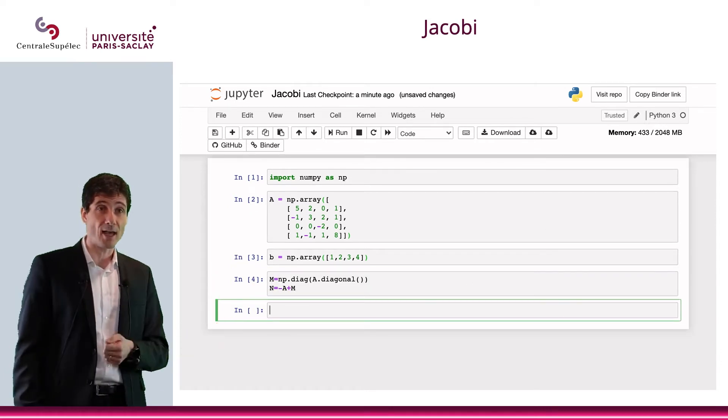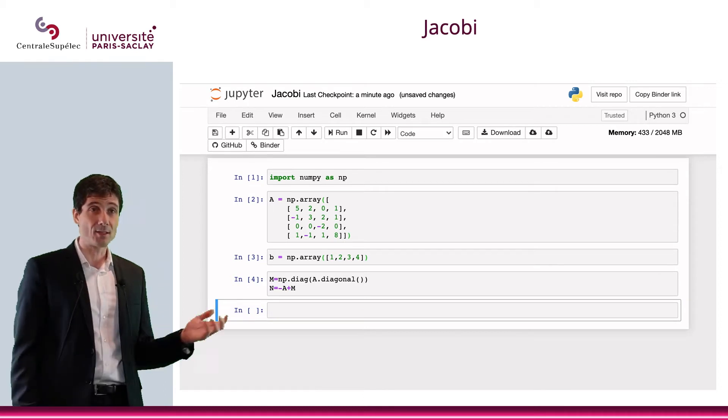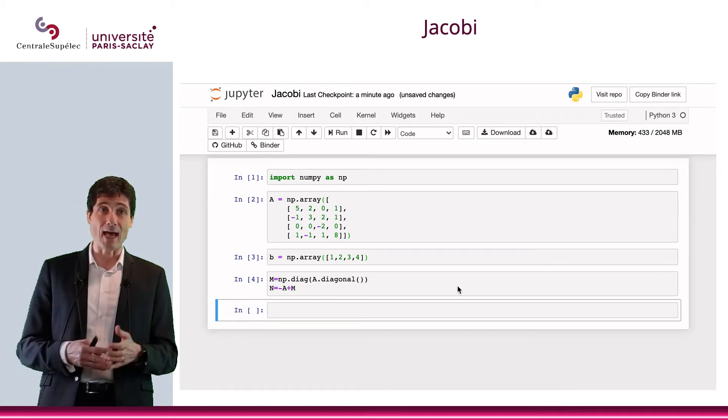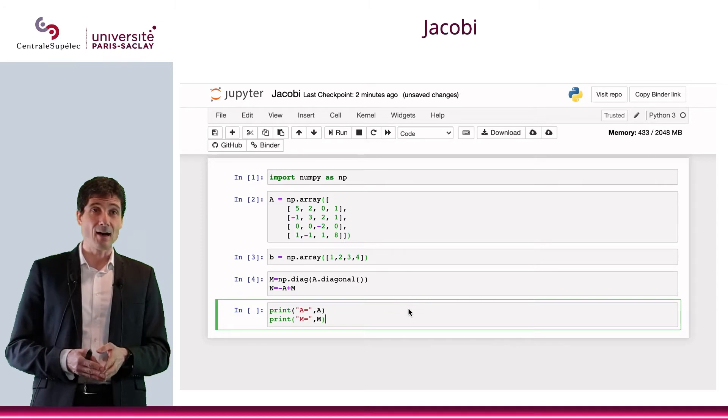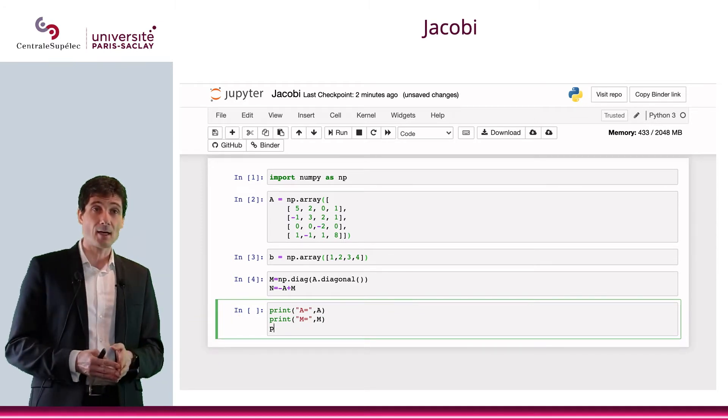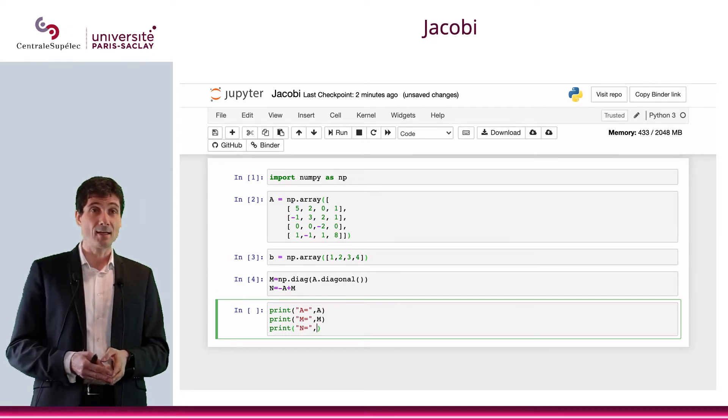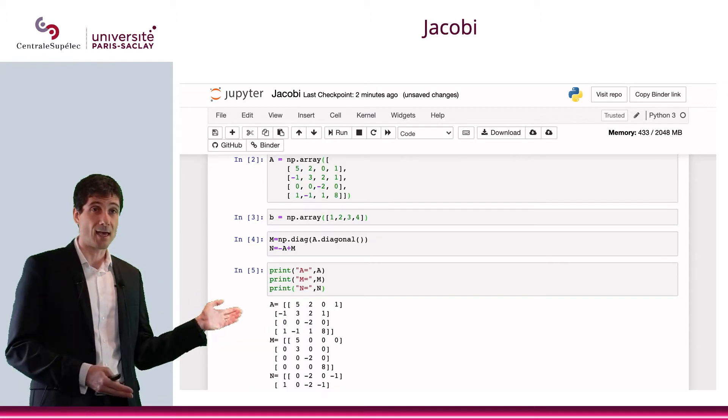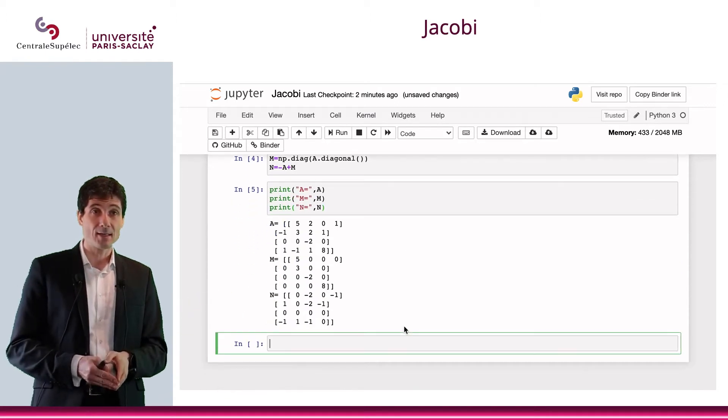So first, I'm going to enter M and N. Well, this is just some syntax to actually have the diagonal terms of A. And obviously, once I have M, well, N is easy to compute. Let me print all three matrices A, M, and N to make sure that no mistakes were made. Here is A, here is M, and here is N. It seems okay.